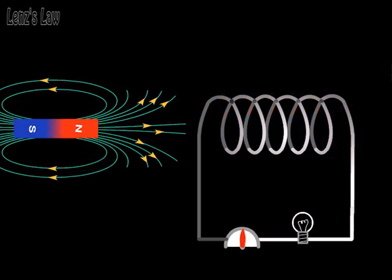When the magnet stops moving, there is no changing magnetic field. The current in the loop is zero.